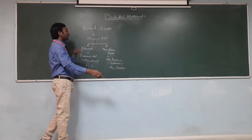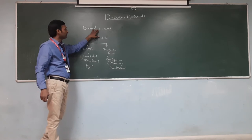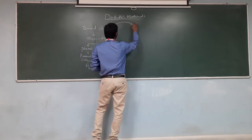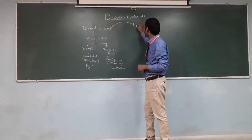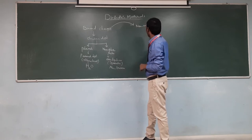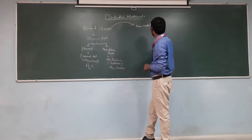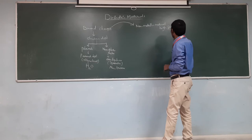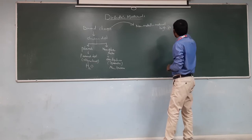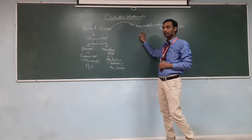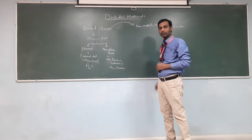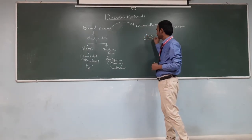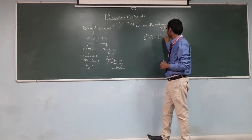Dielectric materials possess bound charges by their configuration. Based on bound charges, they are non-metallic materials with a high specific resistance. Now, the complex permittivity of a dielectric material is a function of both a real part as well as an imaginary part.